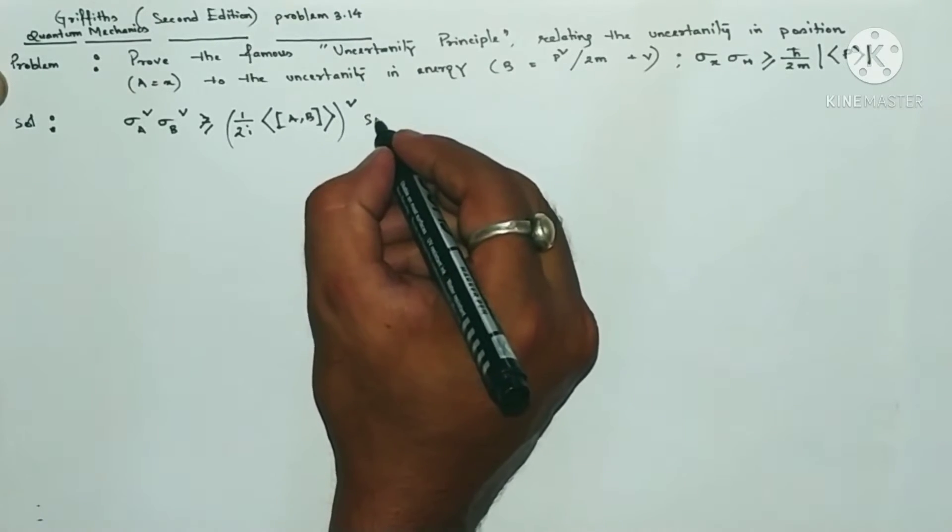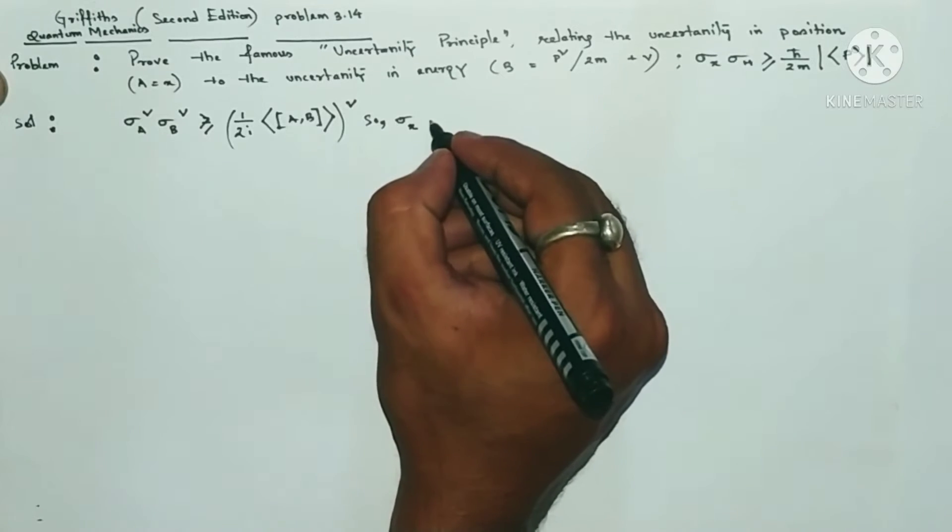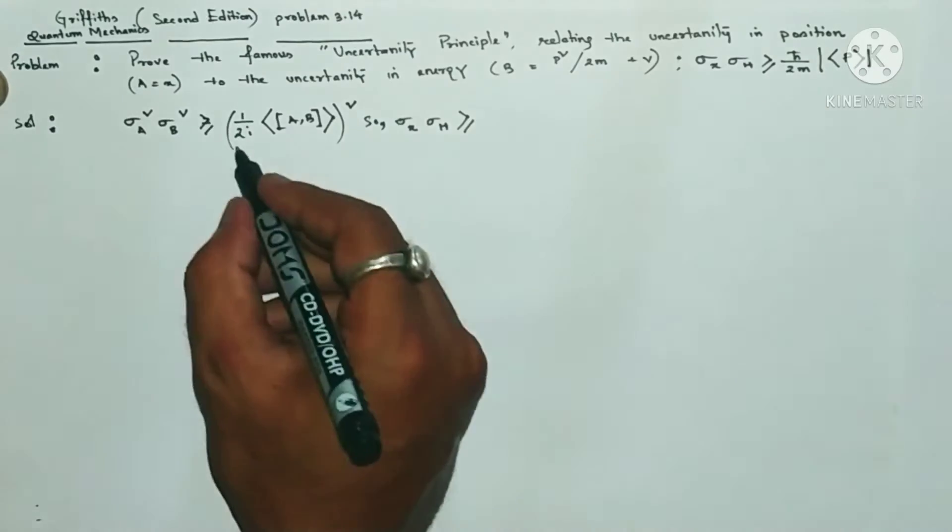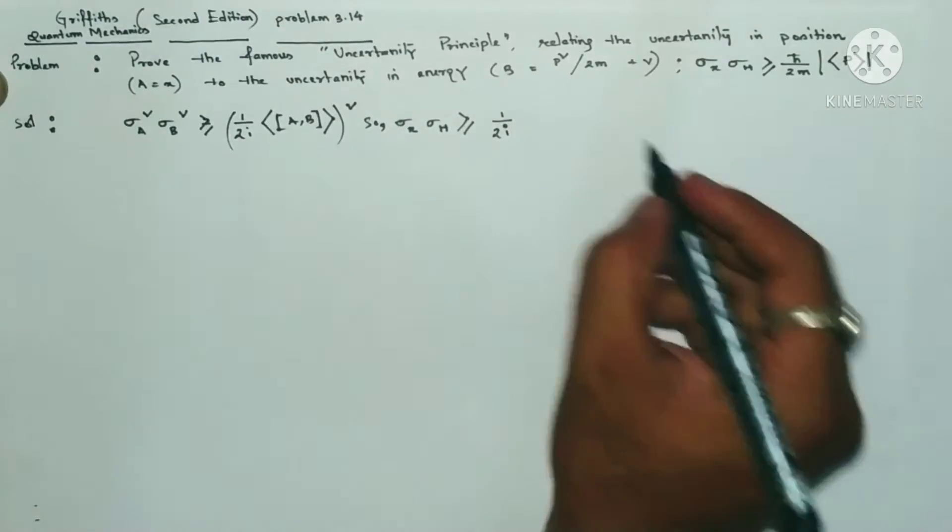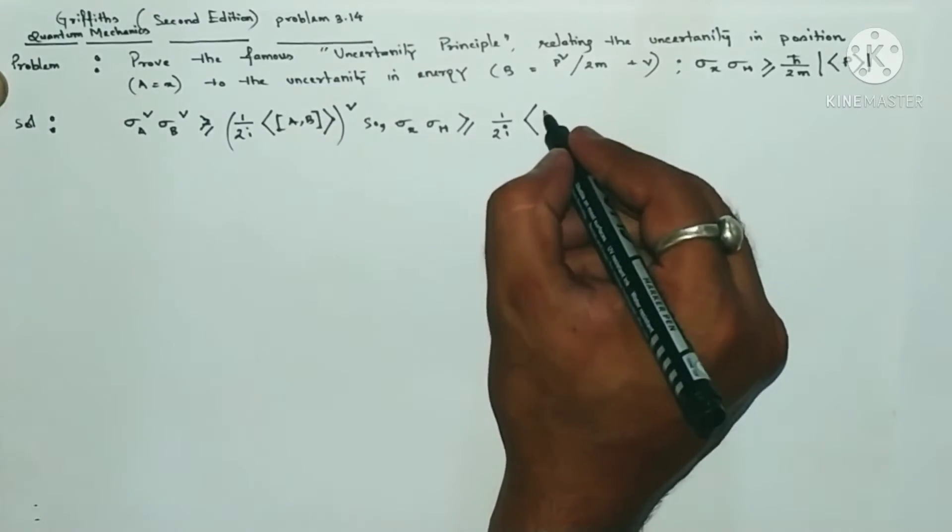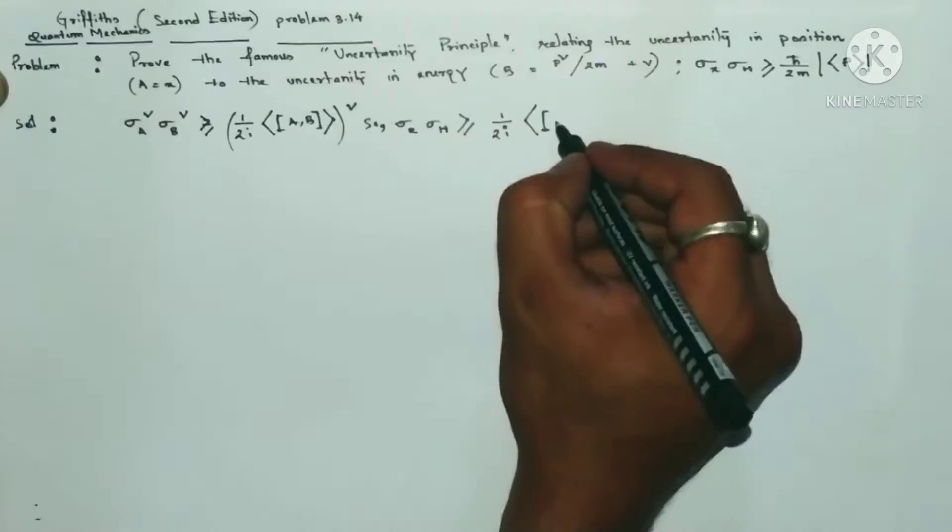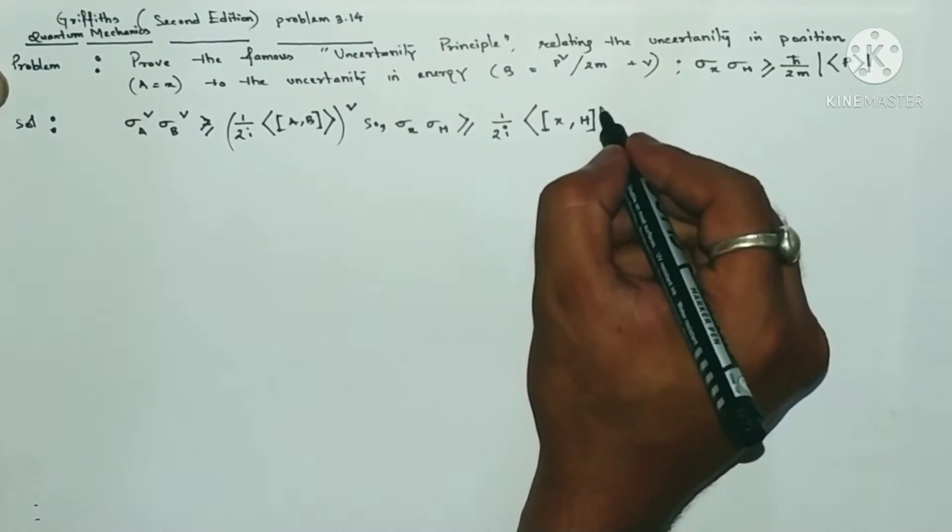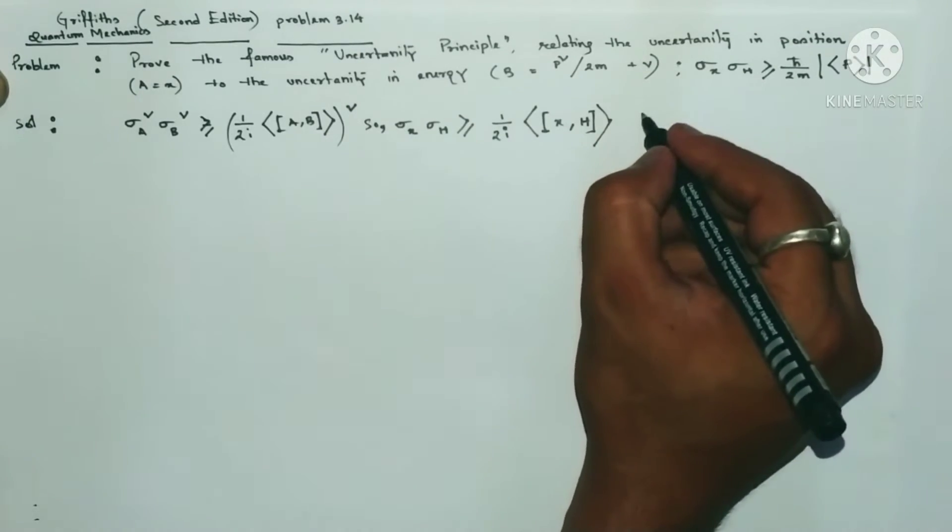We will be applying this principle. In the case of sigma X multiplied by sigma H, we can write one by 2i times the expectation, and in place of A we write X comma Hamiltonian H.